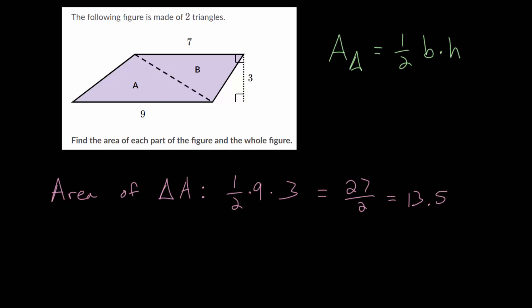From here, let's find the area of triangle B. For this one, we want to take half the base, and the base of this one is seven, multiplied by the height, and the height is also three here. So seven times three is 21, and 21 over two we can write as 10.5.